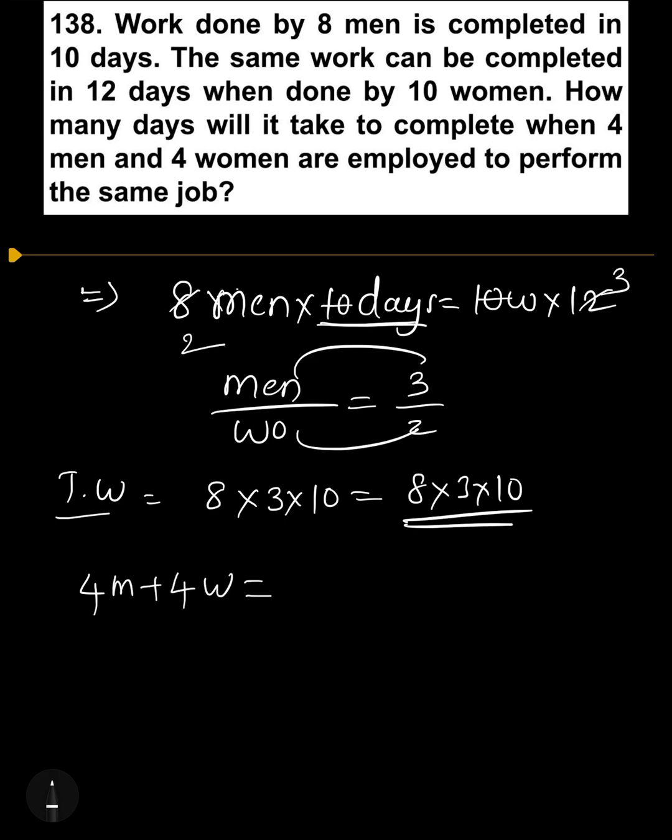Their efficiency: men efficiency 3 and women efficiency 2. 4 times 3 plus 4 times 2. 4 times 3 is 12, 4 times 2 is 8. 12 plus 8 is 20. 4 men and 4 women efficiency is 20.